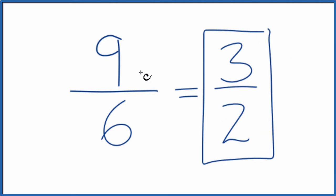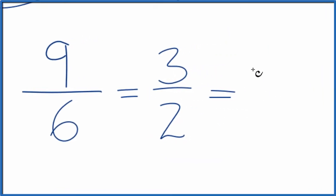So that would be a simplified version of 9 over 6. But this is an improper fraction. If you want to write this as a mixed fraction, 2 goes into 3 one time with 1 left over, and we call that 1 half.